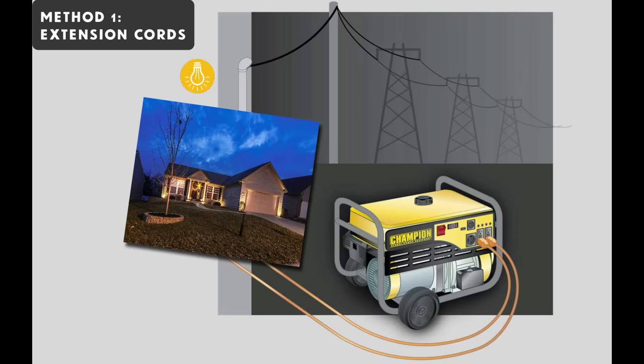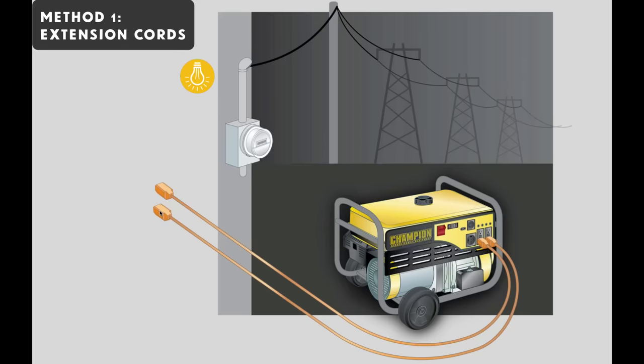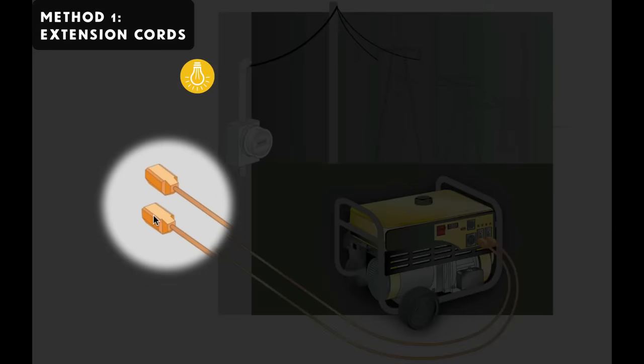Not everything can be plugged in, of course, because many items are hardwired into your home, and that's one of the drawbacks of this method. Another drawback is limited output. I mean, here you can see we only have two outlets for two extension cords.